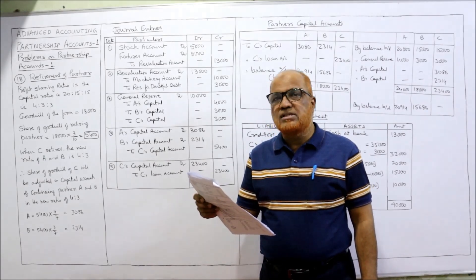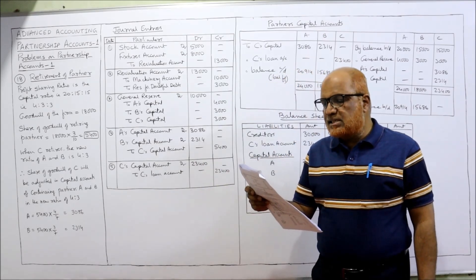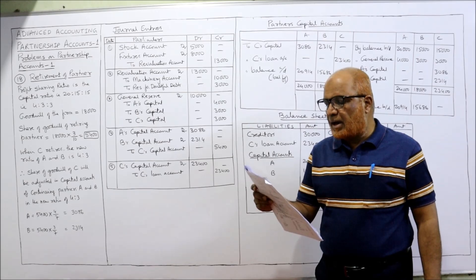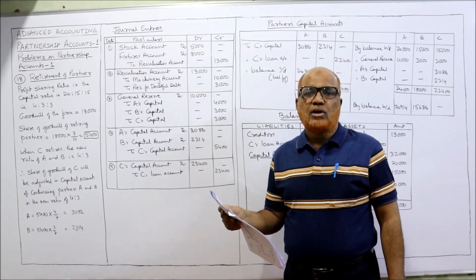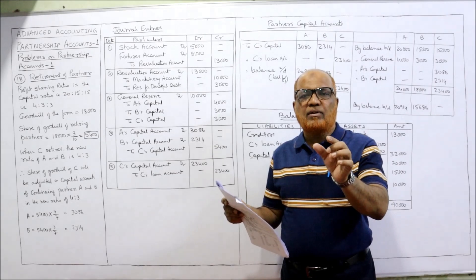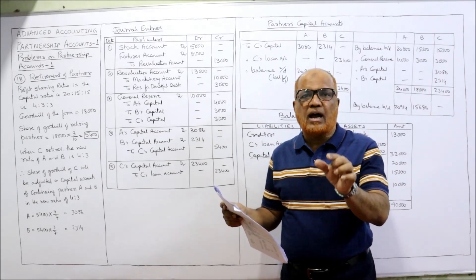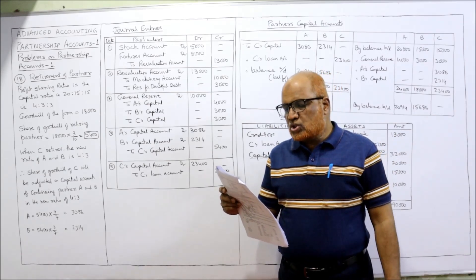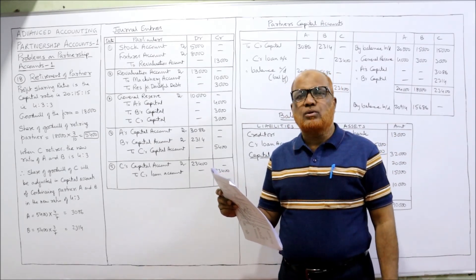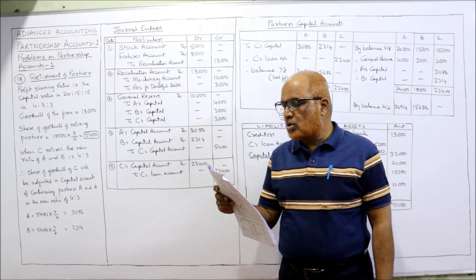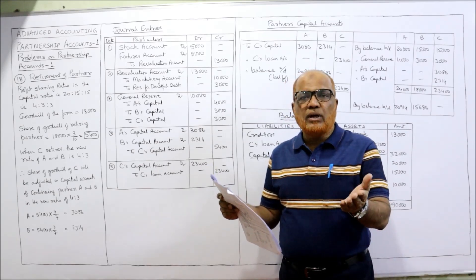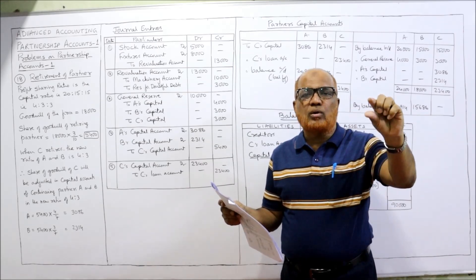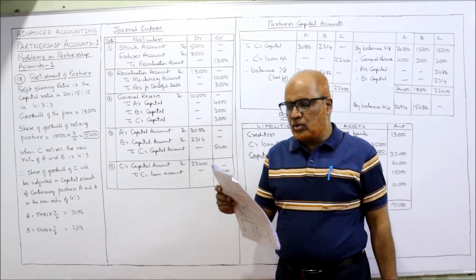On 31st December, C retires from the firm. For this purpose, goodwill of the firm has been valued at 18,000. At the time of retirement of C, stock has been revalued at 20,000. The balance sheet value of stock is 15,000, so we have to increase stock by 5,000 — stock account debit, revaluation account credit.